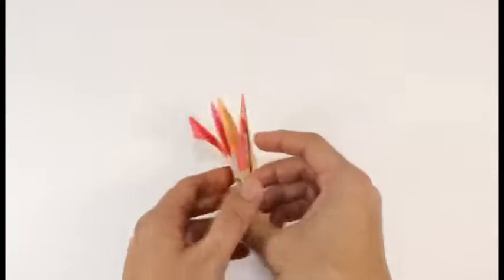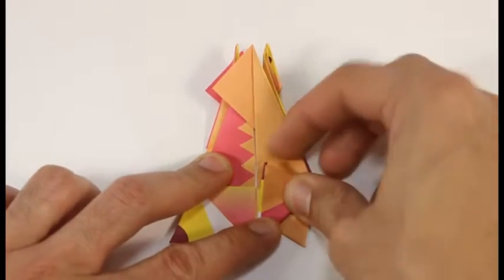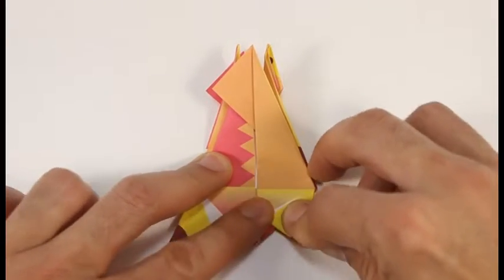We've just made two of the dragon's legs. Turn over. Fold in and down. Repeat on the other side.